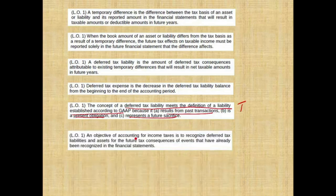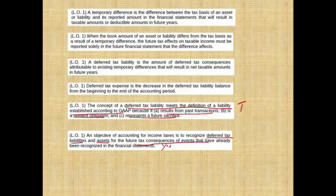An objective of accounting for income taxes is to recognize the deferred tax liabilities and assets for future tax consequences of events that have already been recognized in the financial statements. Is this the objective of accounting for income taxes? Yes. The deferred tax asset and deferred tax liability tell you what's going to happen in the future based on what already happened in the financial statements.